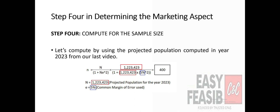In our last video, the projected population computed for the year 2023 amounted to 1,223,423. We will be using the year 2023 projected population since the start of operation discussed in the last video is 2023. Just replace them with the actual numbers, and you now know that the sample size is equal to 400 respondents. So when all 400 respondents say that they like your product or service, we can say that the whole 1,223,423 people like your product or service.